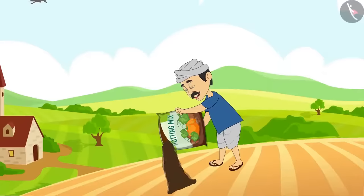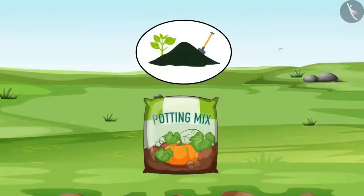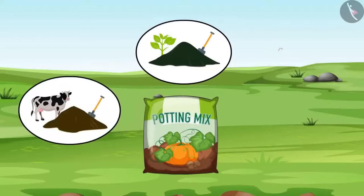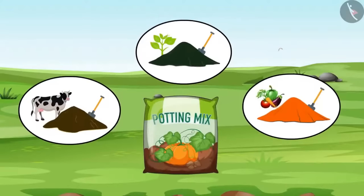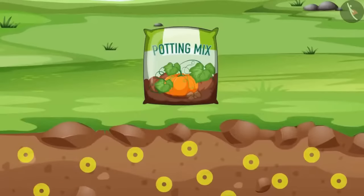You must have seen farmers adding black matter to the soil before sowing seeds. The same dark matter is called manure. Manures are prepared by decomposing dead plants, animal waste, vegetable waste, etc., which makes the soil rich.